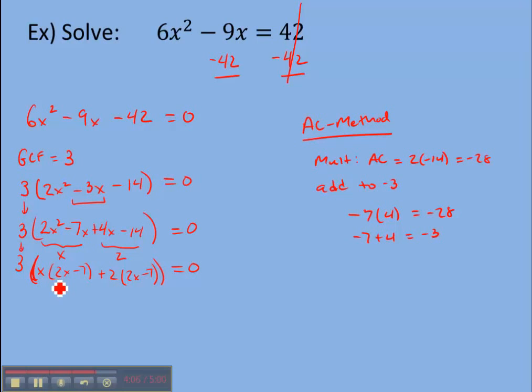Once we factored out GCF from each piece, now we want to see what matches, which is 2x minus 7. So we're going to have 3 times 2x minus 7 times x plus 2. Alright, because that's what's left over, it goes in the second set of parentheses, and that's equal to zero.